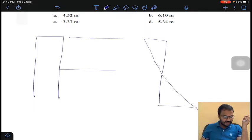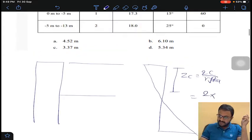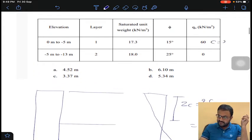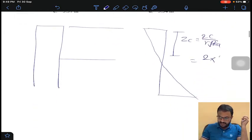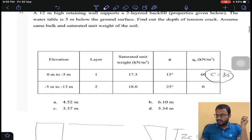If you solve, the depth of tension cracks Zc is equal to 2c divided by gamma root Ka. So 2 into c equals 30, and half of q is c. So 2 into 30 divided by gamma is 17.3 into 0.589 under root. You will get 4.52 meters. The depth of tension cracks is 4.52, option A for question number 2.